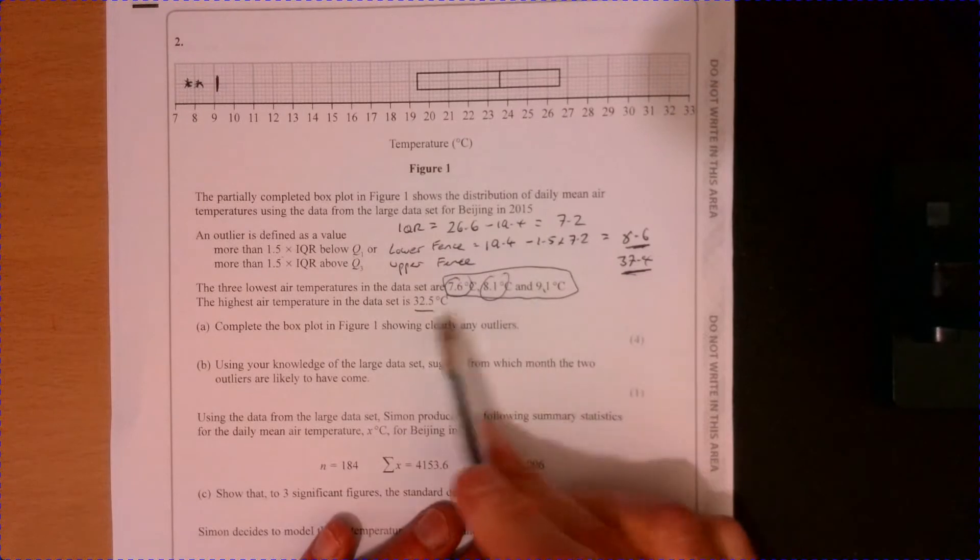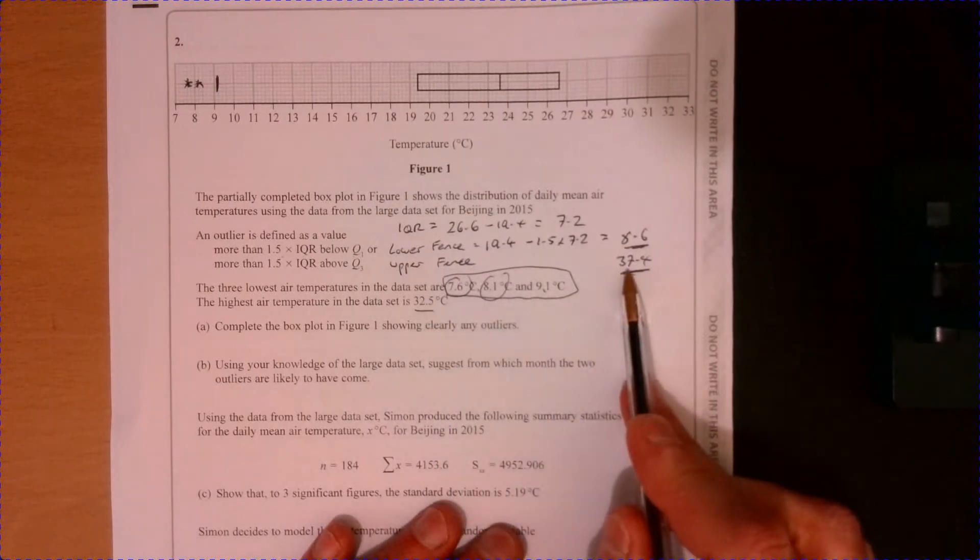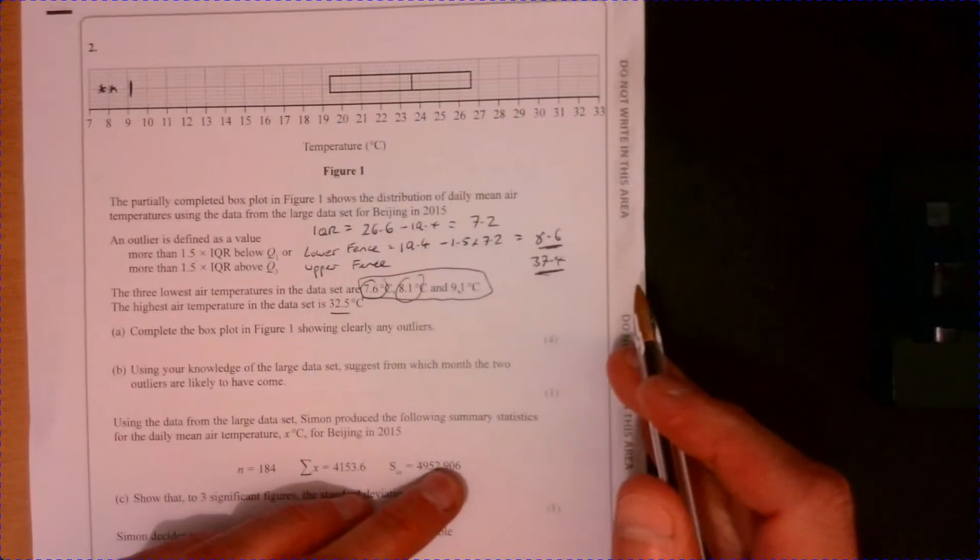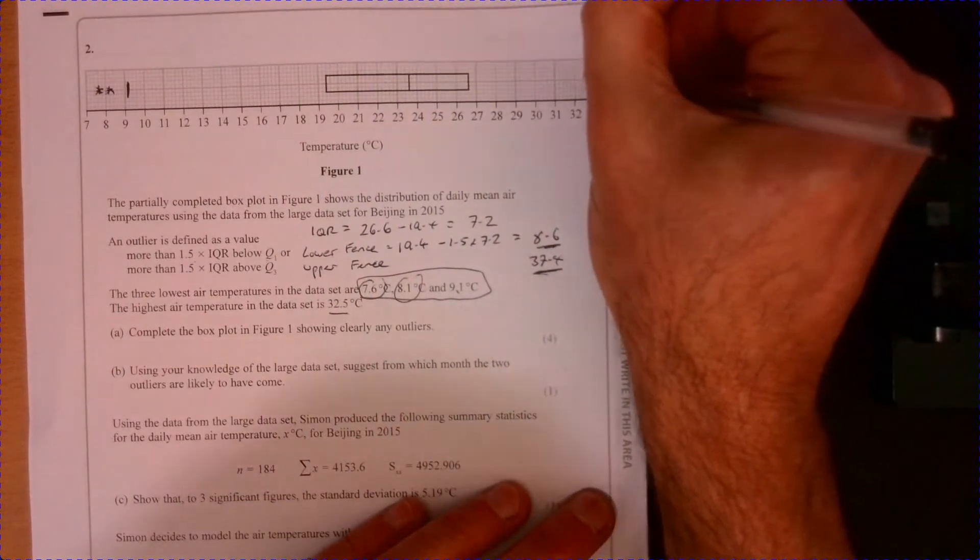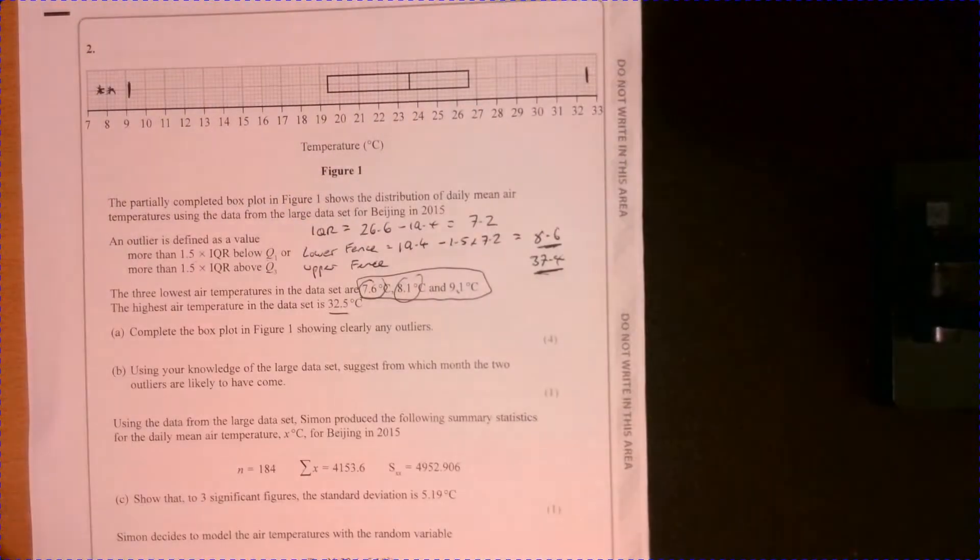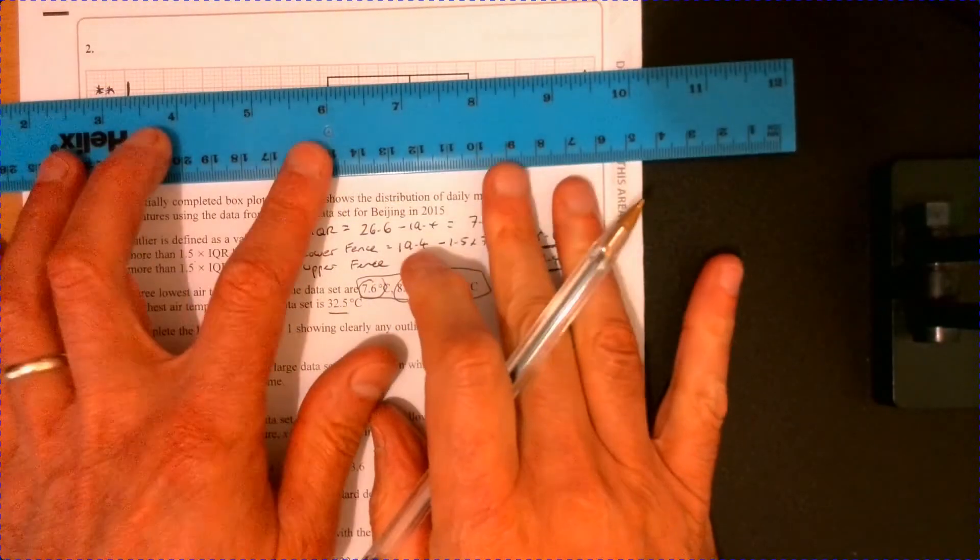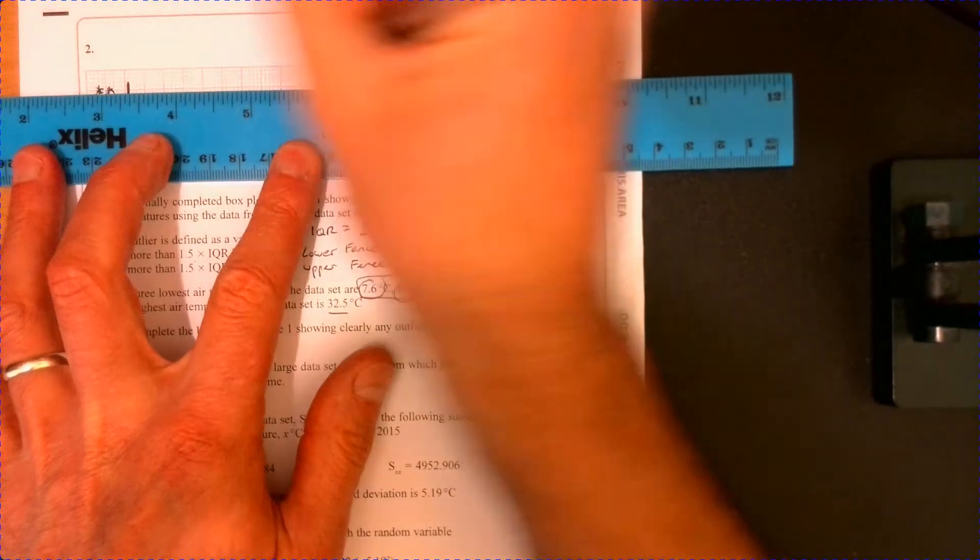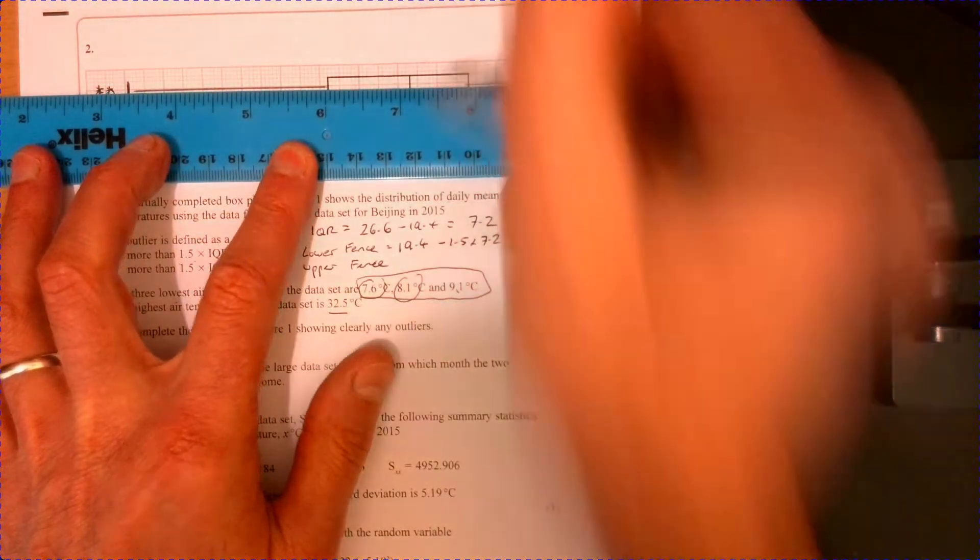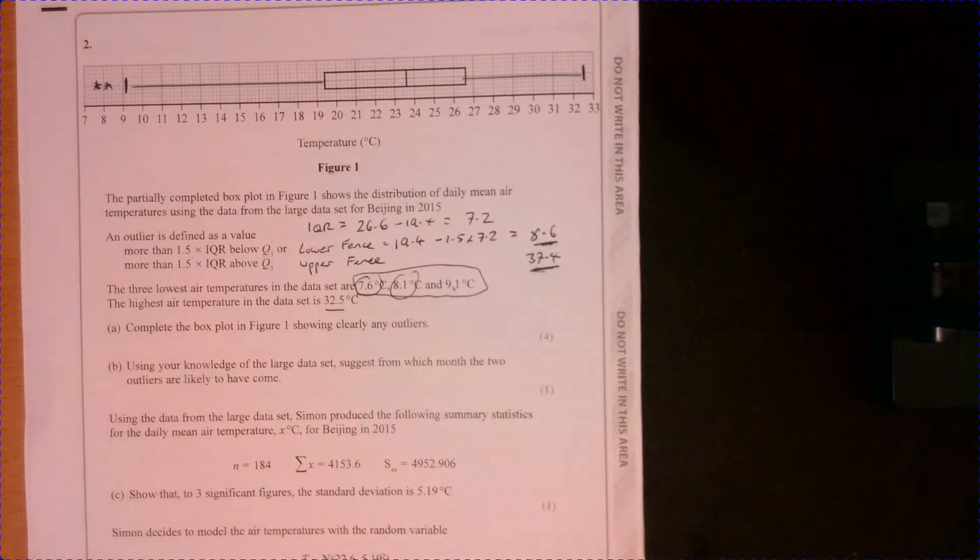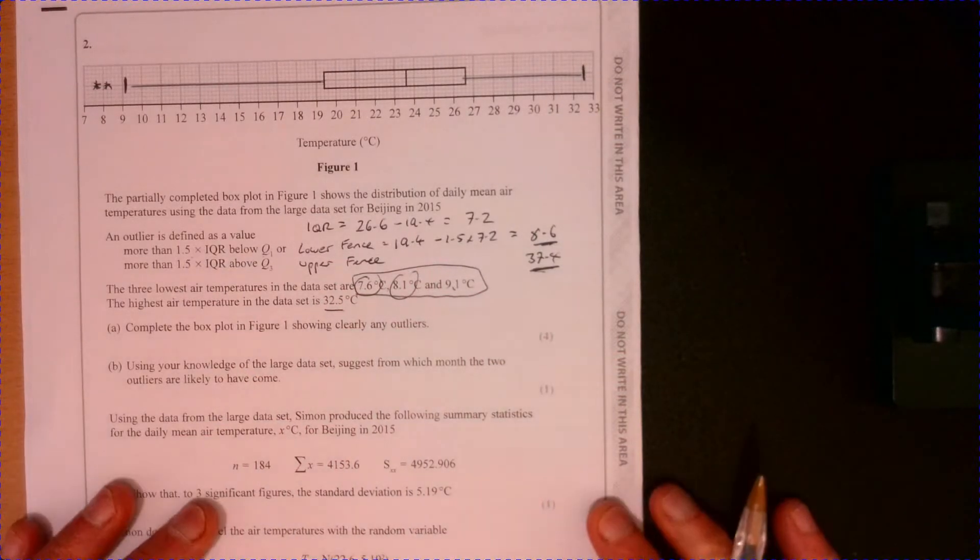So do the same at the top end. 32.5, right. 32.5 is inside 37.4. So on here, we can just go to 32.5. And then what we need to do, let's just pop these together. And there we are. We have a complete box diagram there.